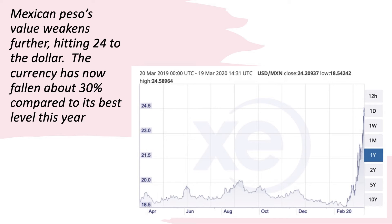This chart from XE shows the value of the Mexican peso against the dollar. Since the middle of February 2020, the peso had actually been appreciating slightly — rising from 20 pesos to the dollar to about 18 over the autumn months into 2020. But since then, one dollar can now buy over 24 pesos compared to 18 — the peso has fallen and depreciated by more than 30 percent. These are two clear examples of currency volatility.